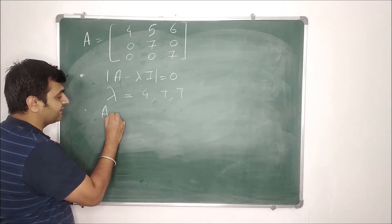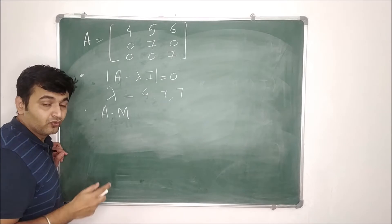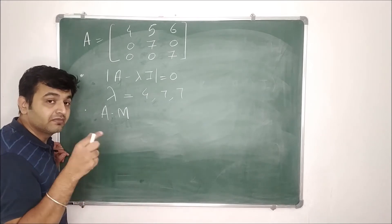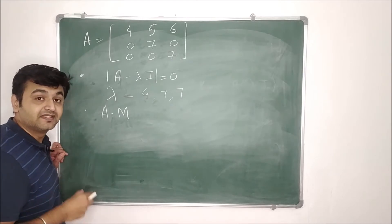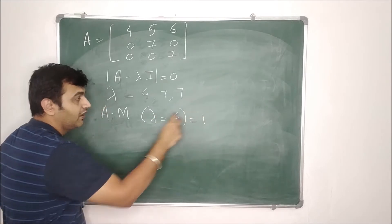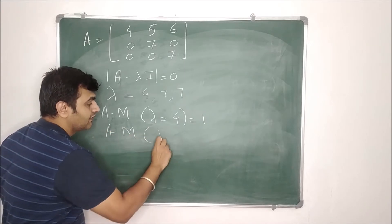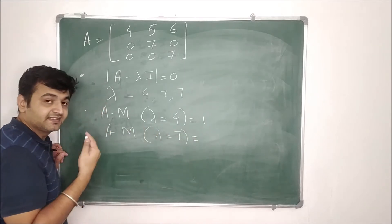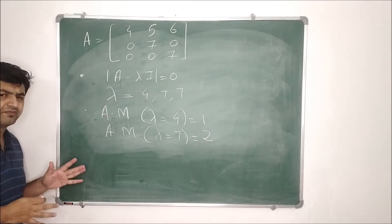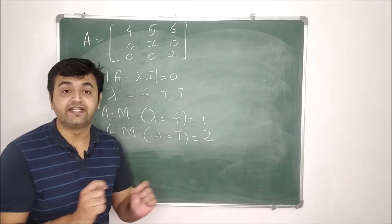What is algebraic multiplicity? It is related to an eigenvalue. You take lambda equal to 4 and see how many times 4 is repeated — that number is the algebraic multiplicity. So algebraic multiplicity for lambda equal to 4 is 1, because 4 is occurring only once. For lambda equal to 7, since 7 is repeating twice, the algebraic multiplicity is 2. Once you find the eigenvalues, just see how many times each is repeated.